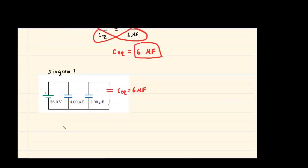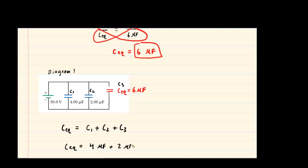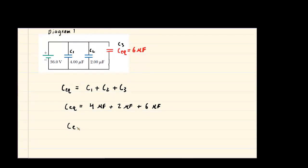We can write that C_EQ equals the sum of the three capacitance values. We call them C1, C2, and C3. It's going to be relatively easy: we take 4 microfarads, add that to 2 microfarads, and then add that to 6 microfarads — the equivalent we found earlier. When we add these together we get 12 microfarads, which is the equivalent capacitance of those three parallel capacitors.